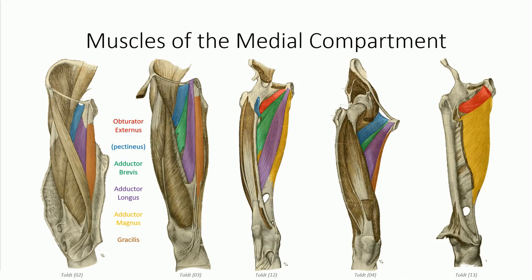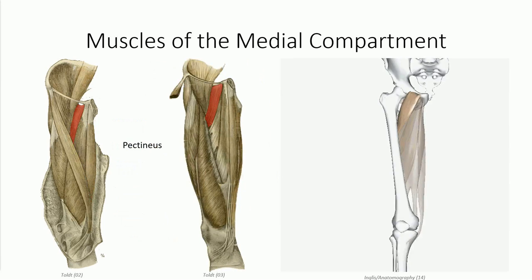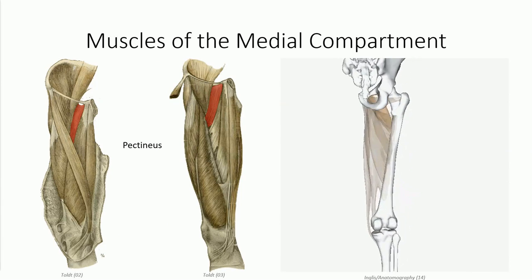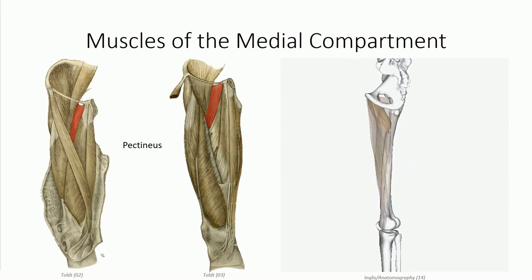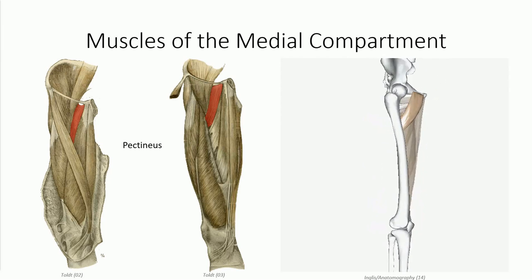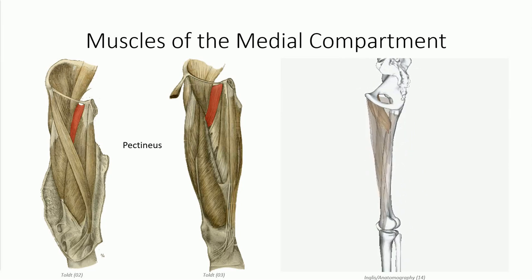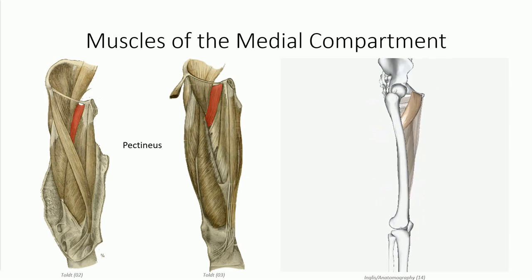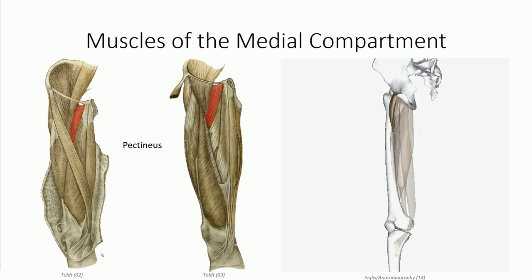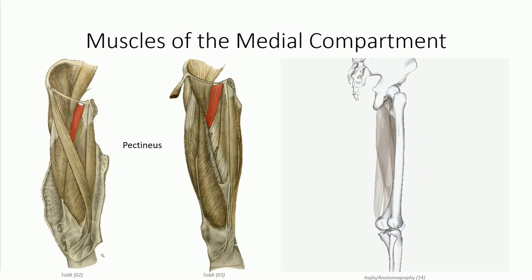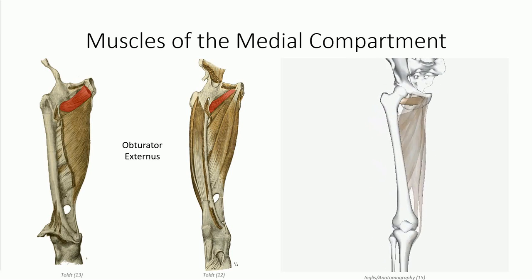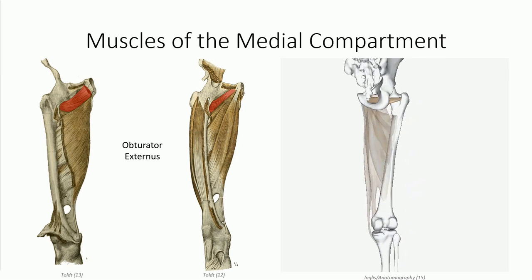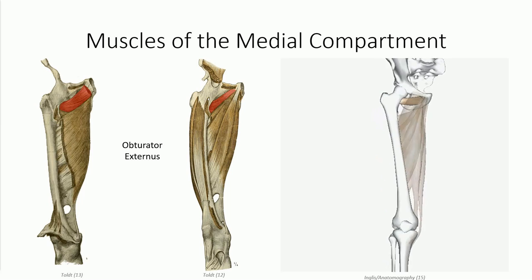We next move to the medial compartment. The muscles here are innervated by the obturator nerve and serve primarily as hip adductors. The first muscle, pectineus, plays a dual role in both the anterior and medial compartments, resting at the border between the two and receiving dual innervation from both the femoral and obturator nerve. It originates from the superior ramus of the pubis and inserts on the pectineal line of the femur, just distal to the lesser trochanter. Deep to pectineus is the obturator externus muscle, which originates off the obturator membrane to insert on the trochanteric fossa medial to the greater trochanter, serving as a lateral rotator and stabilizer of the hip.